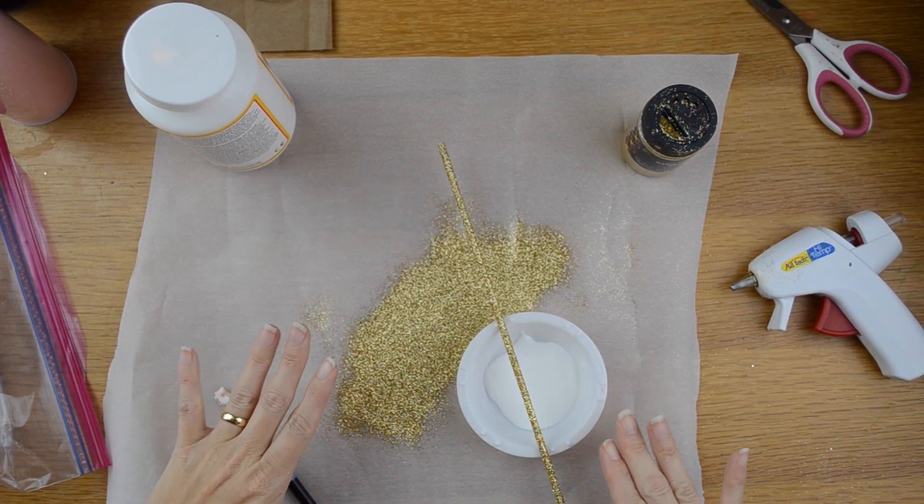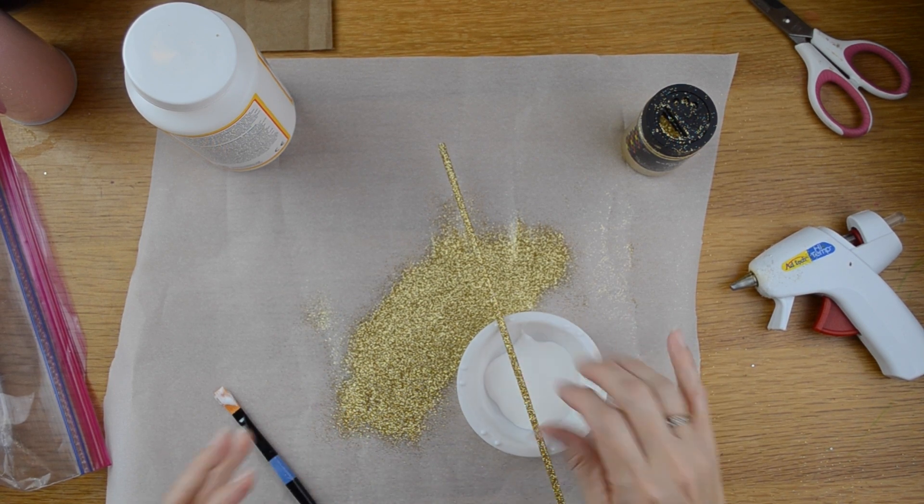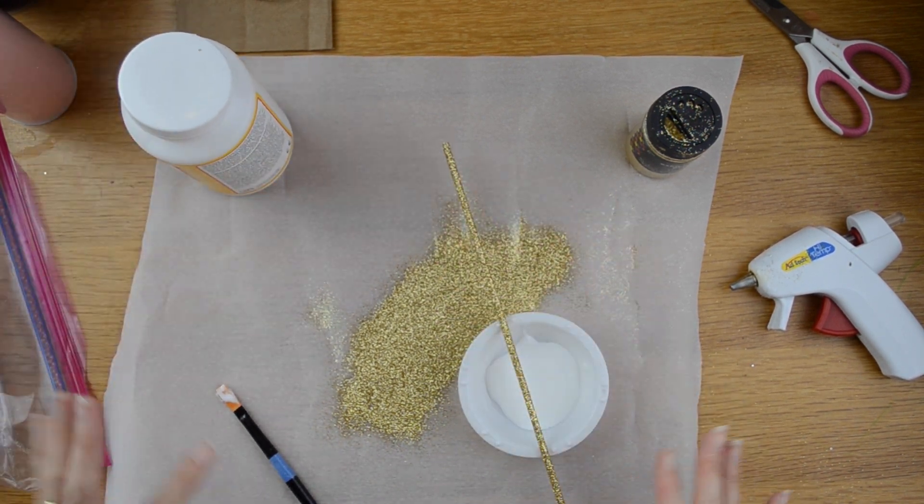So once you have your glitter completely on your dowel rod, you're just going to put it to the side to let it dry for a bit. And once it's dry, we're going to come back and actually Mod Podge over the glitter again that way the glitter doesn't fall off.